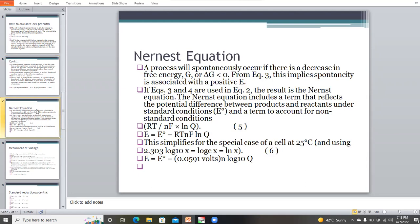Next is the Nernst equation from which we can calculate the potential of different cells. A process will spontaneously occur if there is a decrease in the free energy G or change in Gibbs free energy less than zero. If equation 2 and 3 are used, the result is the Nernst equation. That is E equals E0 minus RT/nF ln Q. Q is the quotient that tells us the rate of the reaction.